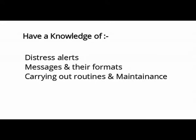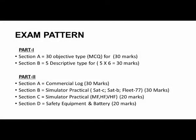The examination consists of two parts. Part one is a written paper with two sections. Section A has 30 MCQ or objective questions for 30 marks — each carrying one mark. Section B has five descriptive or briefly written questions, each for six marks, totaling 30 marks. So Part one — the written paper — is a total of 60 marks.